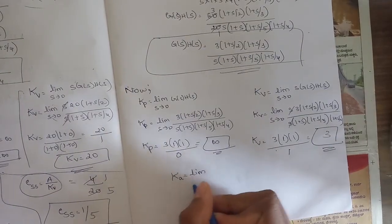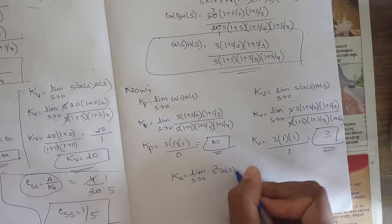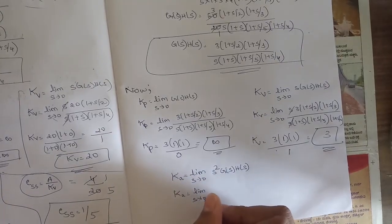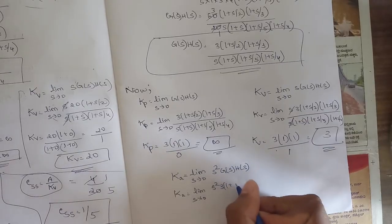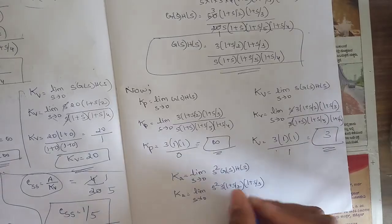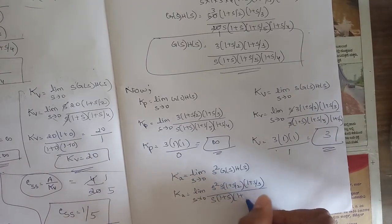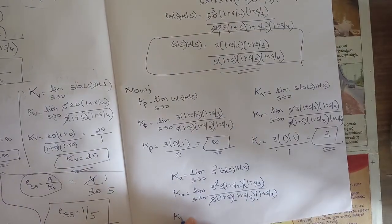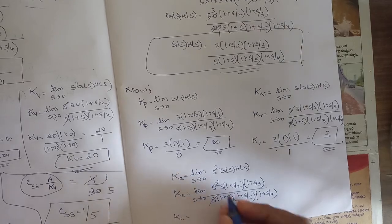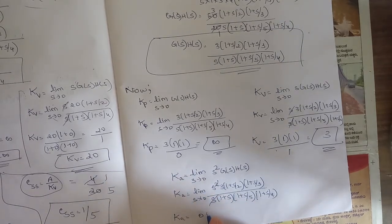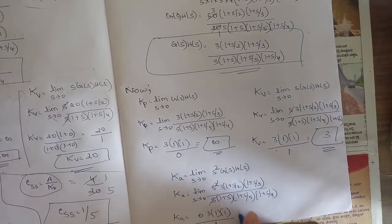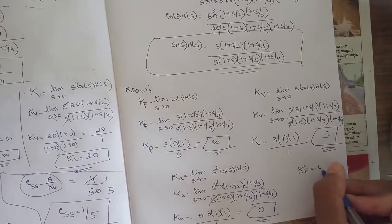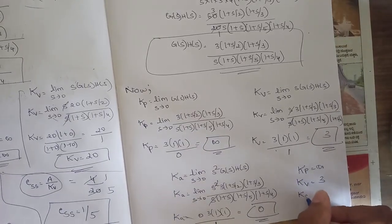For Ka: limit as s→0 of s²·G(s)·H(s). One s cancels with the denominator's s, leaving one s in the numerator. As s→0, the remaining s goes to 0, so Ka equals 0. Summary: Kp = infinity, Kv = 3, Ka = 0.